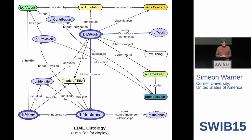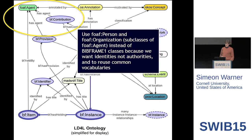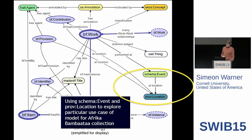For our project we needed to agree on something and move forward. This is a schematic of the Linked Data for Libraries ontology we started using. You can see at the center we have the BibFrame work, instance, and item. But then there are a number of things from other ontologies. For example, we decided to use person and organization as subclasses of agent, because BibFrame 1's version of identities and authorities wasn't going to work for us. We also decided to use a more complex model based around schema:Event and PROV for modeling those parts, because we wanted to explore the Afrika Bambaataa collection where these are key concepts requiring more in-depth modeling.